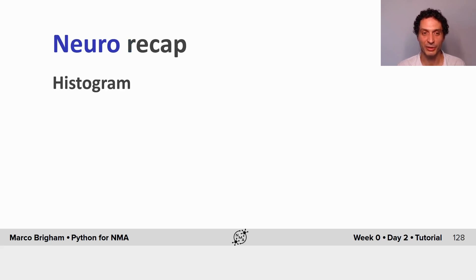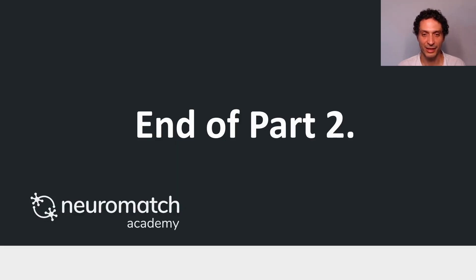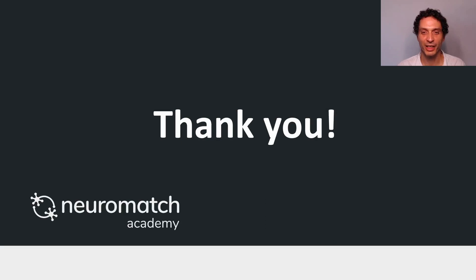On the neural side we saw a histogram, our LIF neuron started spiking and had a refractory period following the spikes. That's the end of part two and the end of our workshop. Thank you so much for watching — I hope you've learned a few things and I hope they can be very useful for the NMA Academy and for your career. Thank you so much.